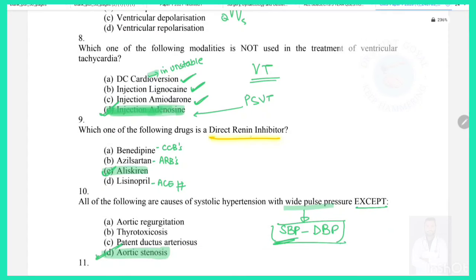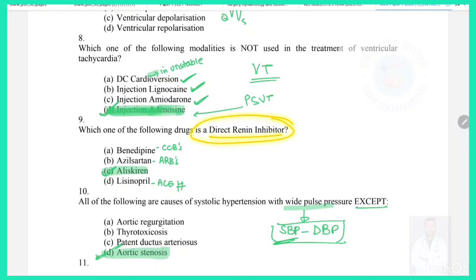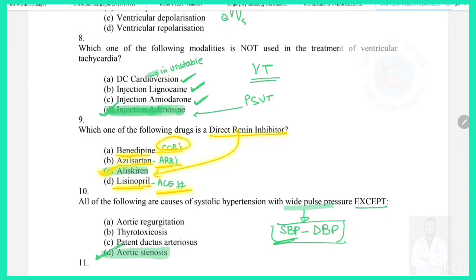Question 9: Which of the following is a direct renin inhibitor? The only direct renin inhibitor we study is aliskiren. Lisinopril is an ACE inhibitor, azilsartan is an ARB, and amlodipine is a calcium channel blocker. So the answer is aliskiren.